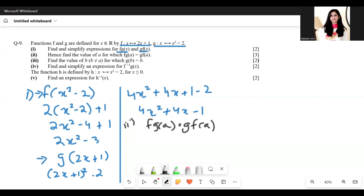So we already have f(g(x)) and we have g(f(x)). All we need to do is replace the x with a and equate the two equations. So 2a squared minus 3 equals 4a squared plus 4a minus 1.